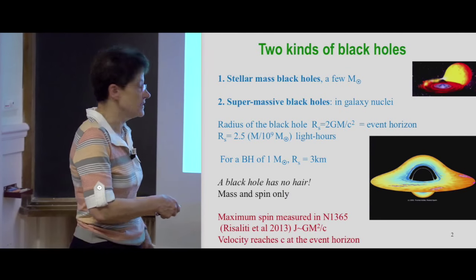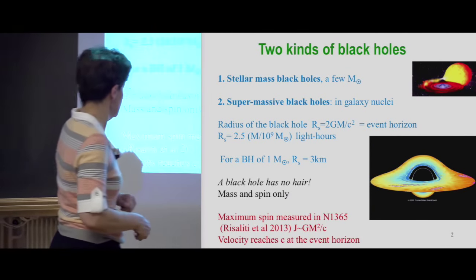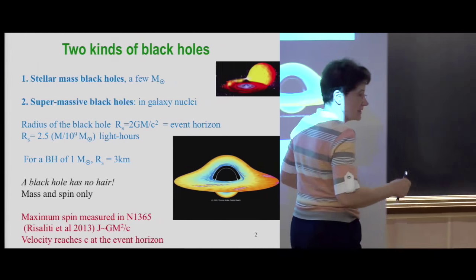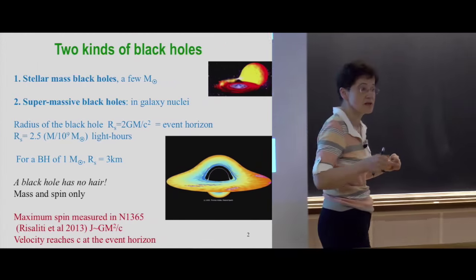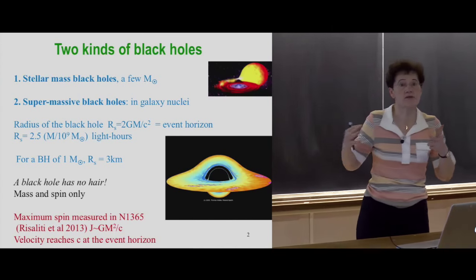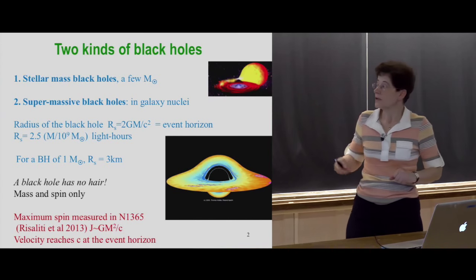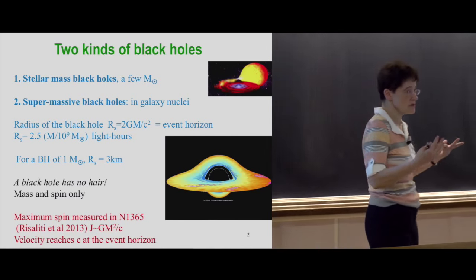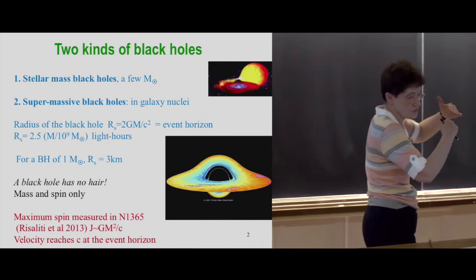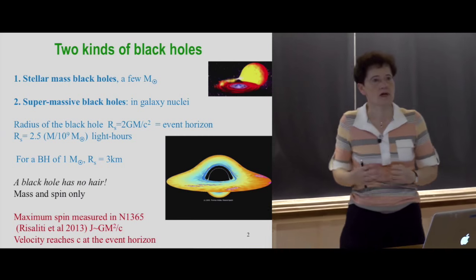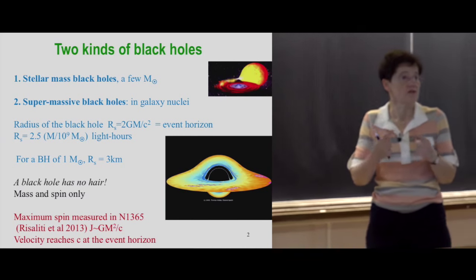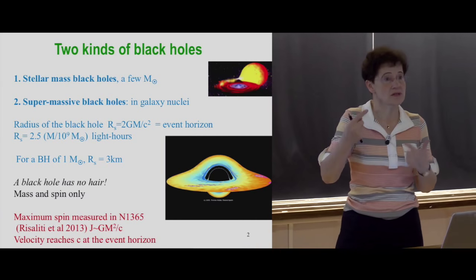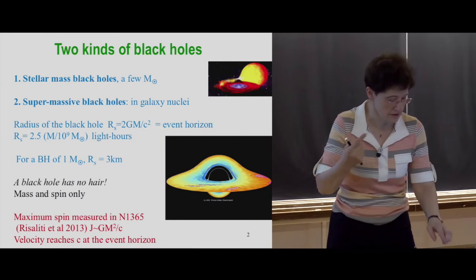We have indeed found, for instance in galaxy NGC 1365, that this black hole is turning at the maximum rate — it reaches the velocity of light at the event horizon. It's frequent to have a lot of rotation. In pulsars, which are neutron stars just before the collapsed black hole, you have millisecond pulsars — a star that can rotate 1,000 times per second on itself.